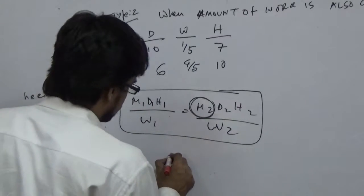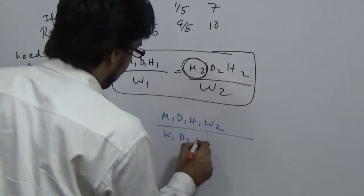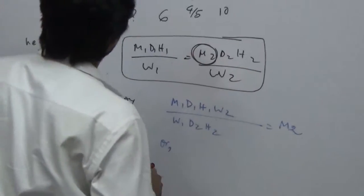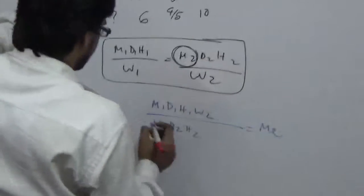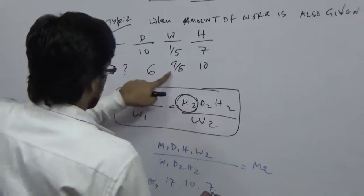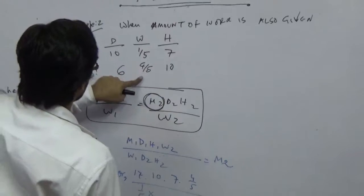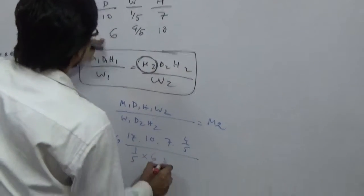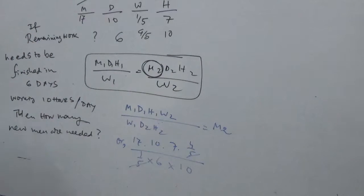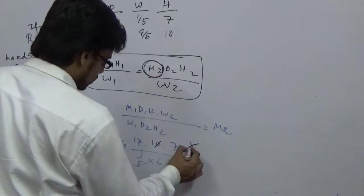Plugging in values: M1 is 17, D1 is 10, H1 is 7, W2 is 4 by 5, W1 is 1 by 5, D2 is 6, H2 is 10. The 5 by 5 cancels out, and 10 and 10 cancel out.